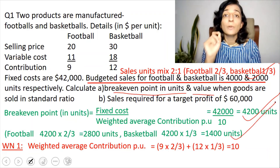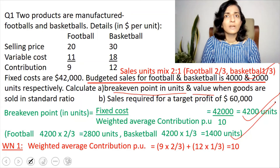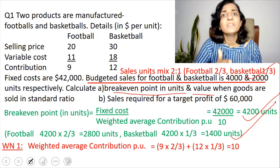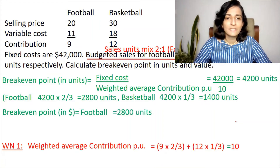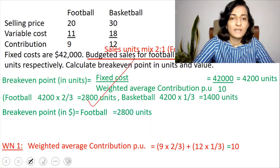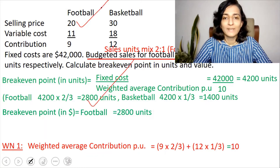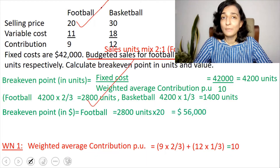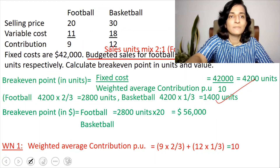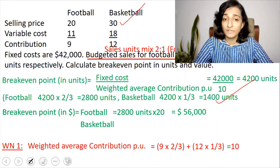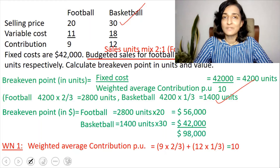We've found break-even in units; now convert to dollars by multiplying by the selling price. For football: 2,800 units × $20 = $56,000. For basketball: 1,400 units × $30 = $42,000. Total break-even sales in dollar = $98,000.